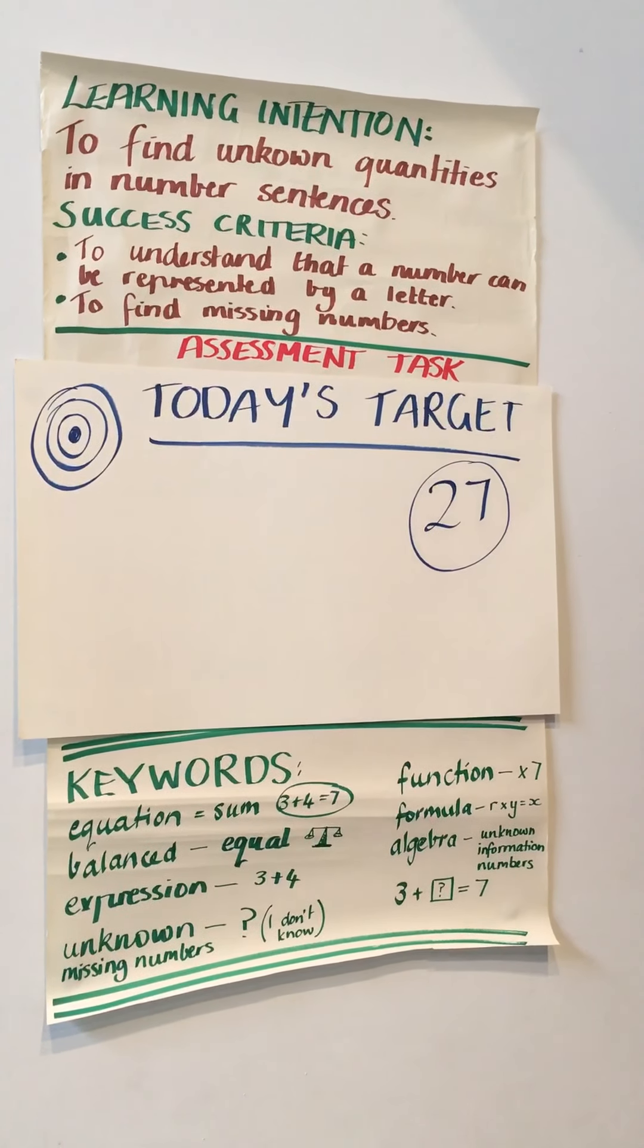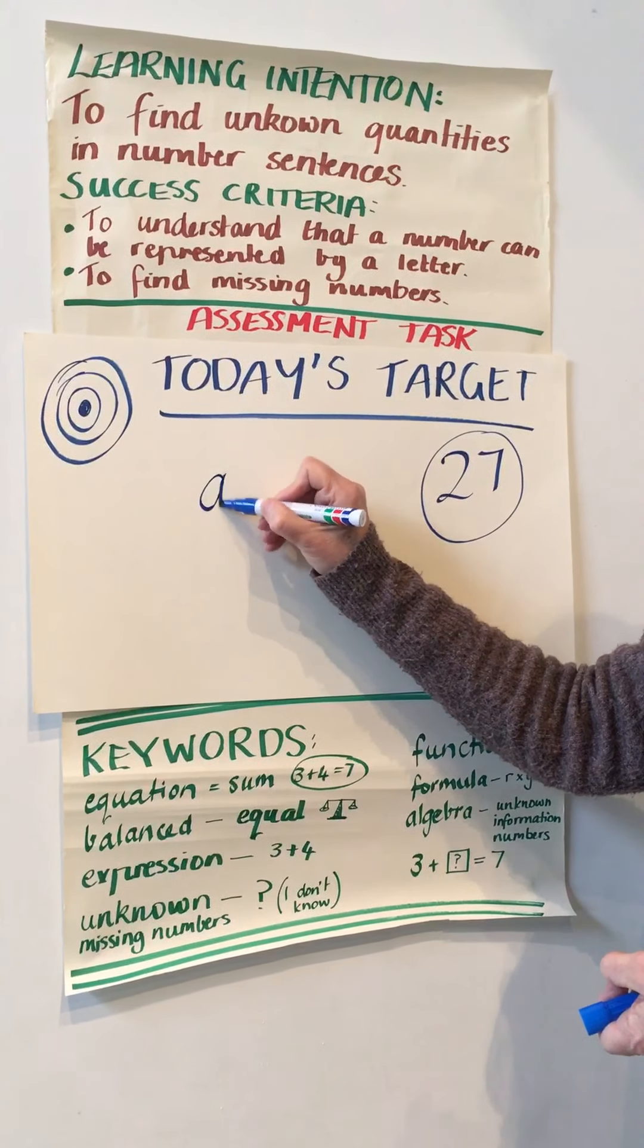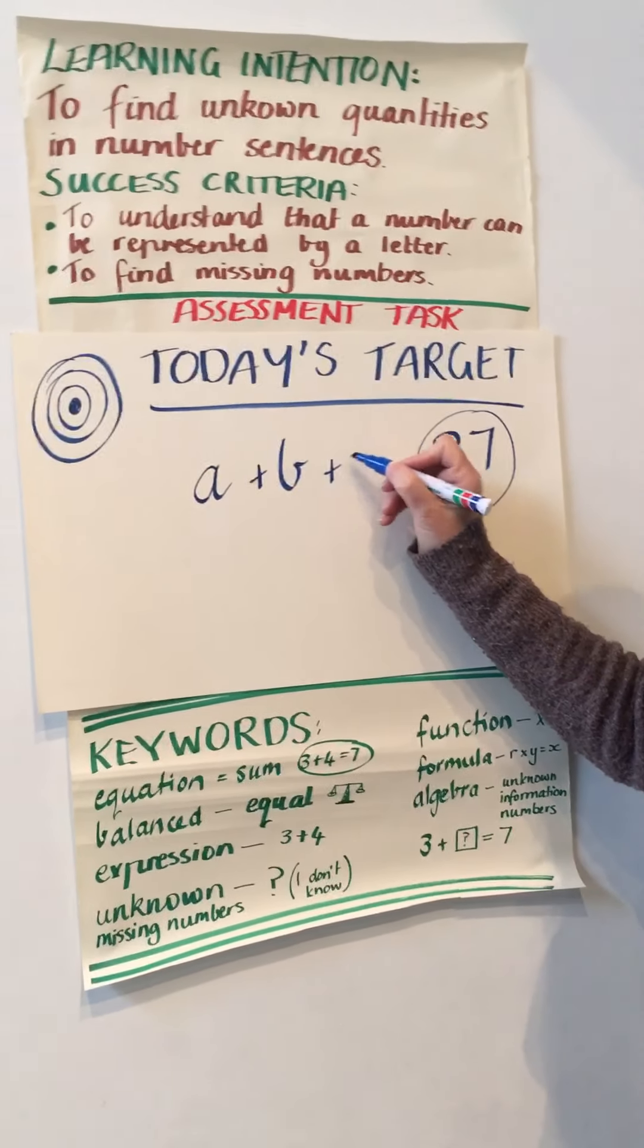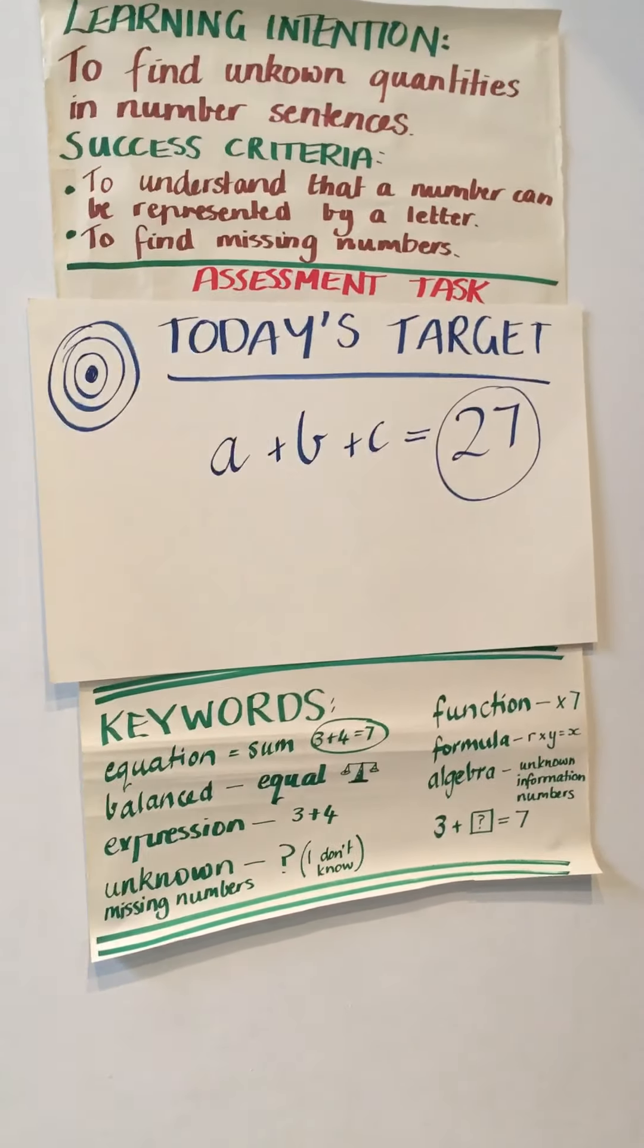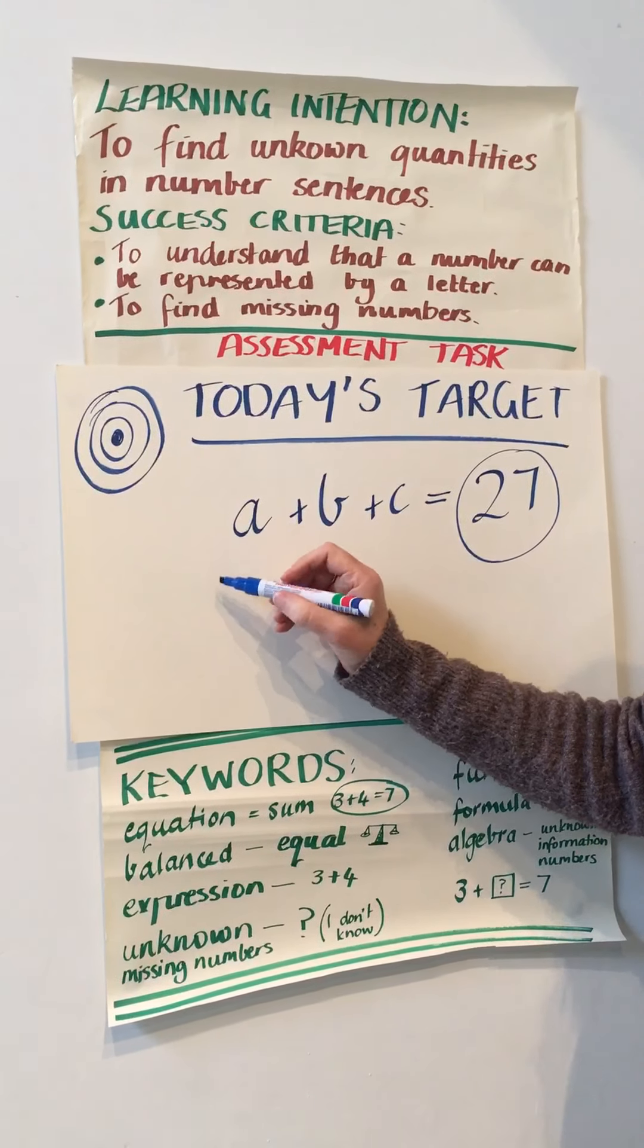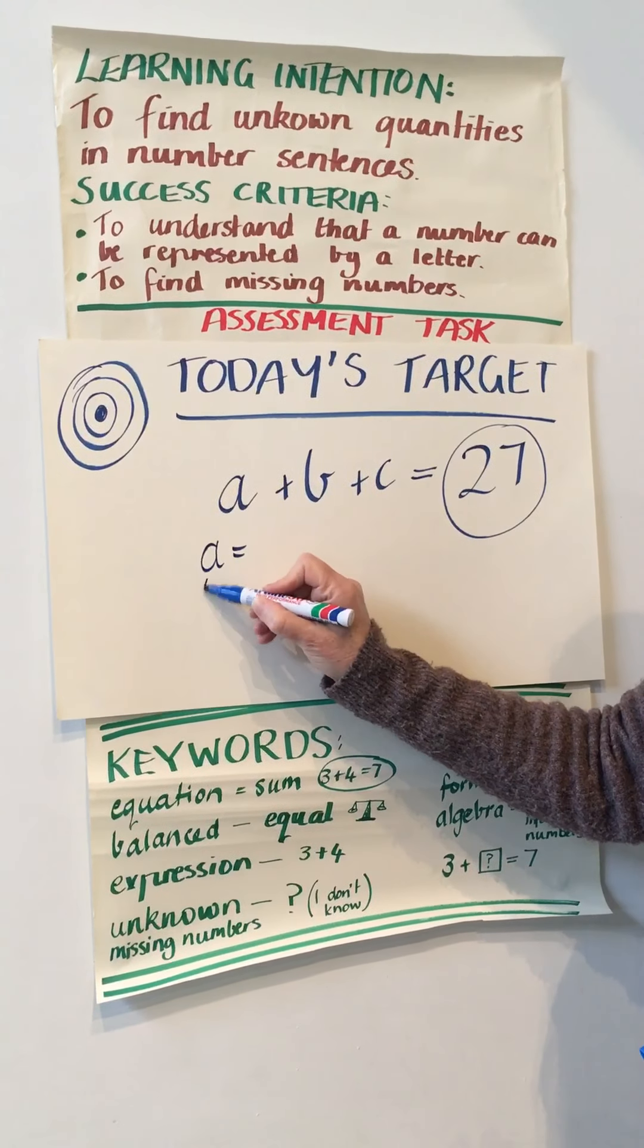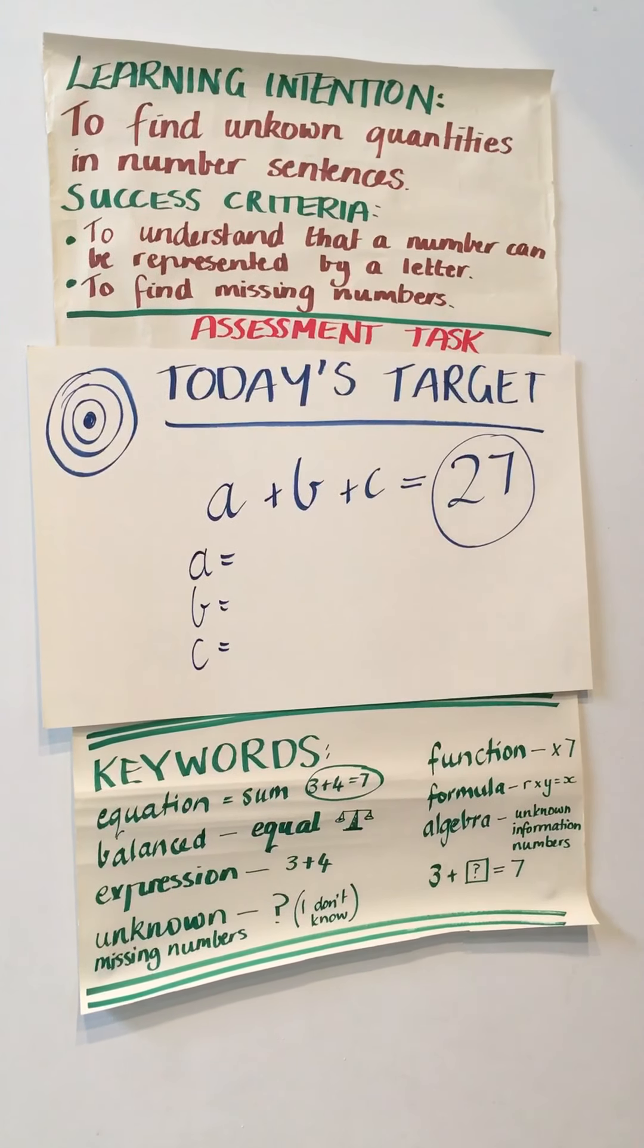Then what you're asked to do is work out some missing numbers. If I said to you that A is a number and B is a number and C is another number, and all together when they're added they equal 27, can you give me some reasonable answers for what A might represent? What B might represent and what C might represent? Olivia, should we have a go at it?